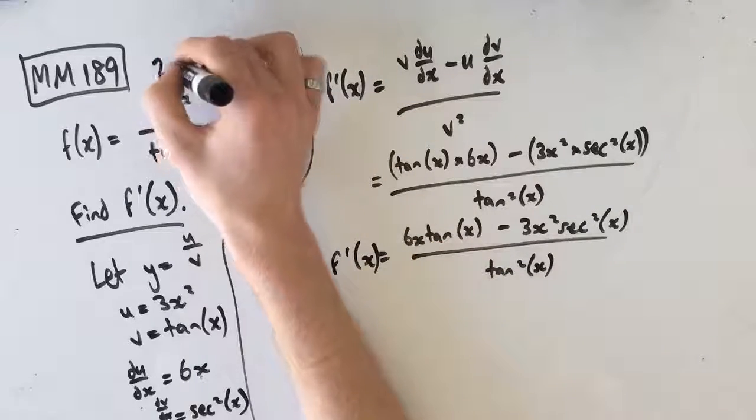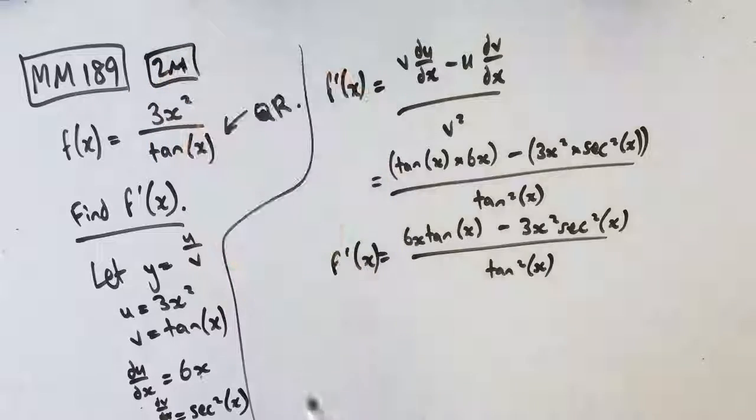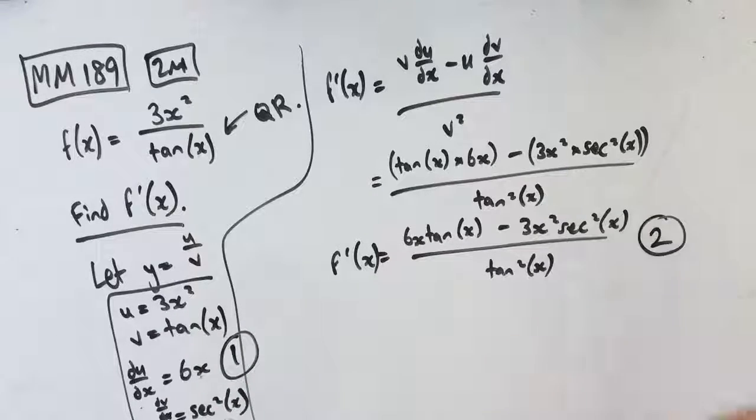So as always, guys, two marks for this question. And your first mark comes by recognizing that it's the quotient rule and figuring out all these values here. So that's your first mark. First mark here. And then your second mark is actually getting the answer and figuring all that out.